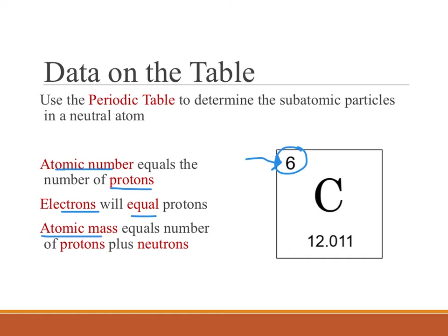The atomic mass is going to equal the number of protons plus the number of neutrons, because the protons and the neutrons have the atomic mass unit of one each. So if we look at our atomic mass number down here, we see 12.011, and so that is the protons plus the neutrons.